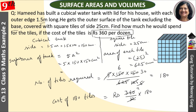Solving this: 360 divided by 12 gives 30, and 30 × 180 equals Rs. 5400. So the total cost of the tiles is Rs. 5400.